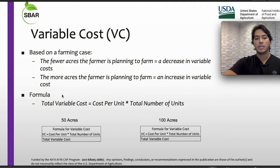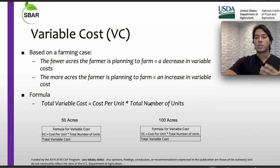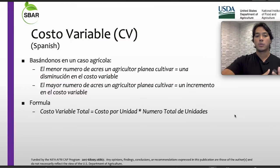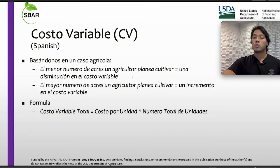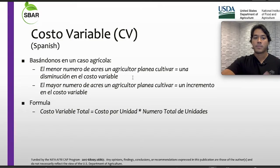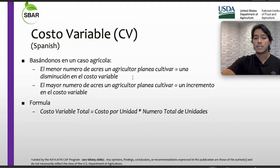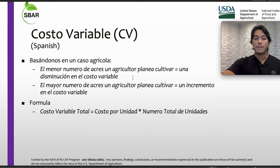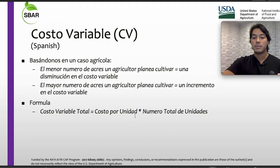Our formula for the variable cost is going to be equal to cost per unit times the total number of units. Costo variable basándonos en un caso agrícola: el menor número de acres que un agricultor planea cultivar nos llevará a una disminución del costo variable. Si el agricultor planea incrementar sus acres, esto llevará a un incremento en el costo variable. Nuestra fórmula es costo variable total igual al costo por unidad por número total de unidades.